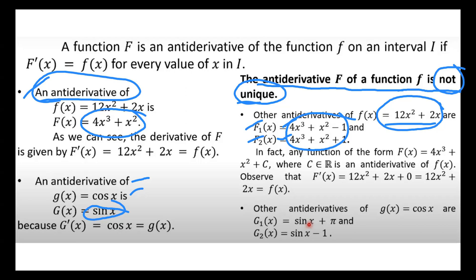Whatever constant you put there — whether 4x³ + x² + 3, − 3, + 4, or + 5 — it will still give us 12x² + 2x, because we are only adding constants. When you take the derivative of a constant, it is just 0. So the first derivative of F(x) = 12x² + 2x + 0 simplifies to 12x² + 2x.